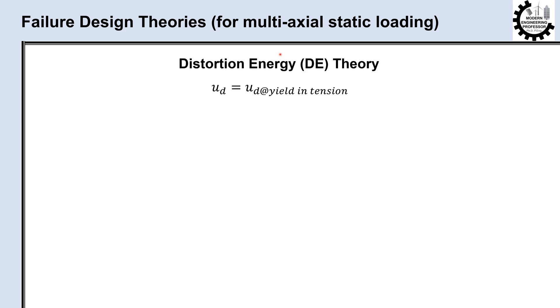This theory predicts that yielding occurs when the distortion energy reaches or exceeds the distortion energy for yield in tension testing of the same material. Distortion energy can be calculated by the following equation in terms of principal stresses sigma 1, sigma 2, and sigma 3. In this equation, nu is Poisson's ratio and E is Young's modulus or modulus of elasticity.